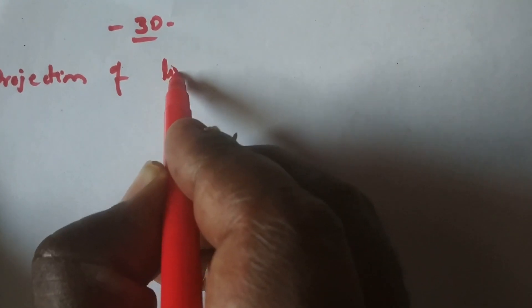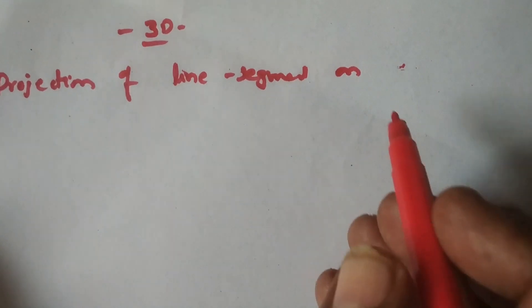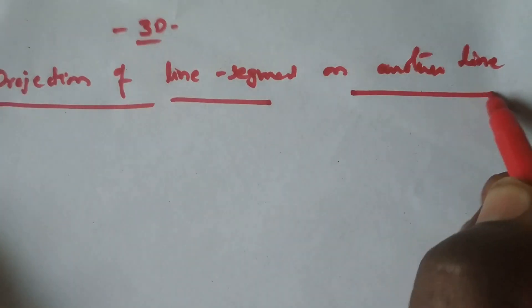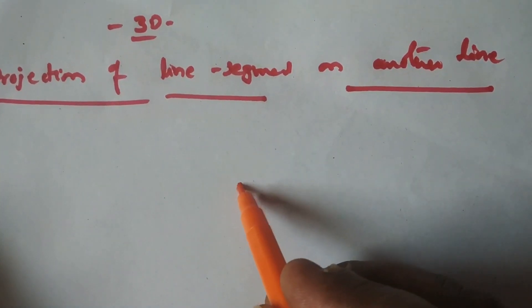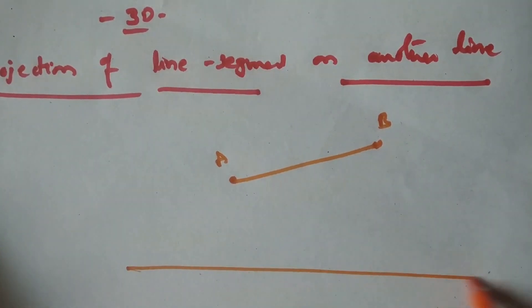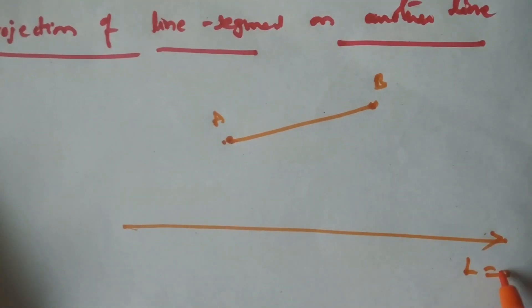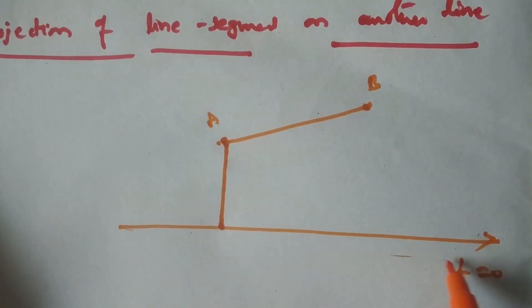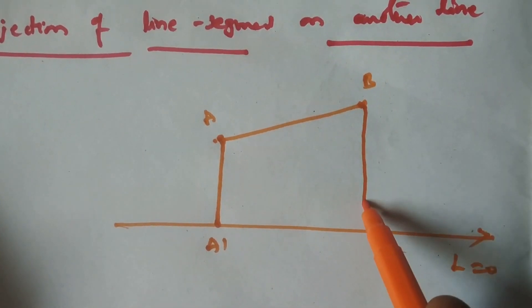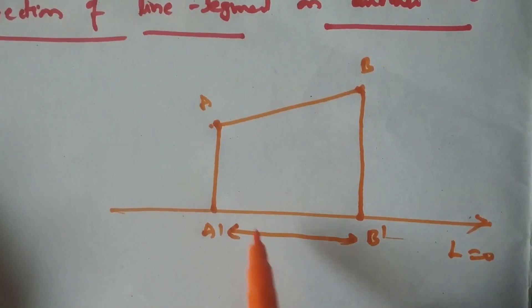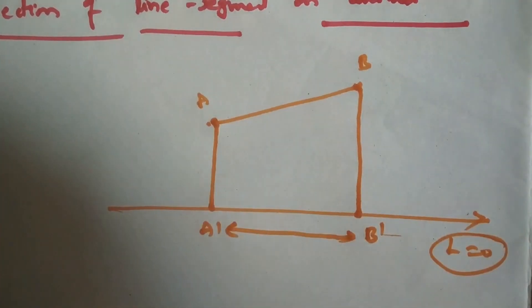Hello students. Today in 3D we see the projection of a line segment on another line. We have to find out the projection of line segment AB on a given line L = 0. We need to find the length of the projection. For this, draw the foot of perpendicular from A to the line, say A dash, and draw the foot of perpendicular from B to the same line, say B dash. Now this length A dash B dash is the length of projection of AB on line L = 0.